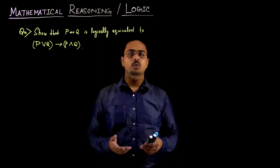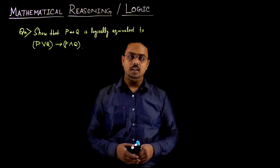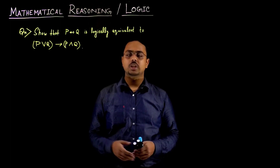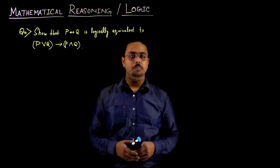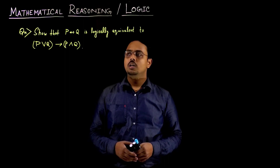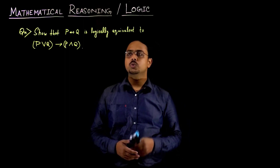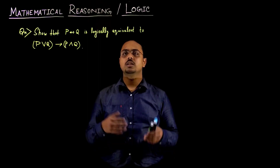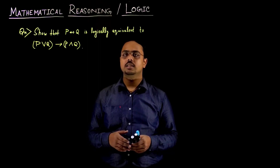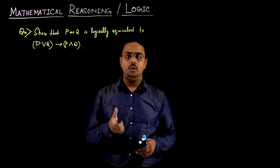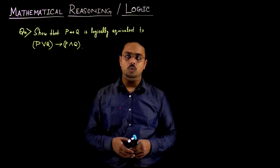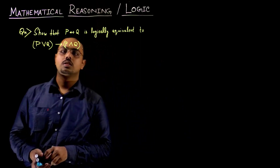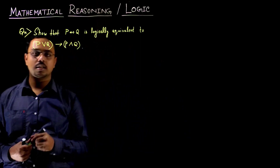So far we have studied various equivalence laws in the chapter of mathematical reasoning or mathematical logic. Let us now use those equivalence laws to solve a simple problem. Here we have the task to show that P is equivalent to Q — that is, P if and only if Q is logically equivalent to P or Q implies P and Q.